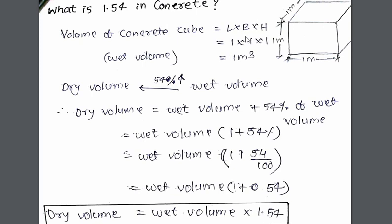It is generally 50 to 55%. But in most of the cases, we consider it as 54%. As you can see here, when wet value is converted into dry value, it increases by 54%. Therefore, dry value equals to wet value plus 54% of wet value.